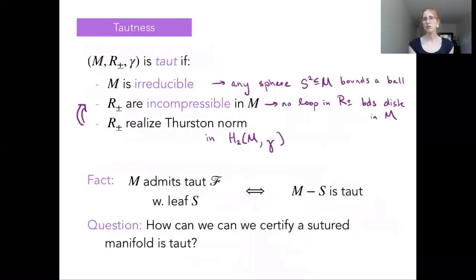So with Thurston norm in hand, we can give a notion of tautness for a sutured manifold. So this is different from when we were talking about taut foliations. There, taut was a descriptor of a foliation, a particular choice of structure on our three manifolds. But now we're giving a notion of what it means just for a sutured manifold to be taut. And this is a very different feel of definition than our foliation one. This is now just very topological.